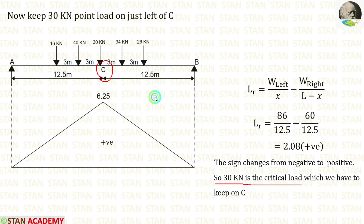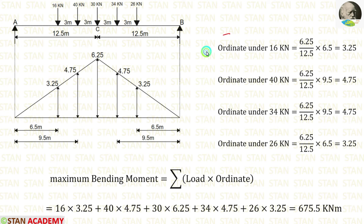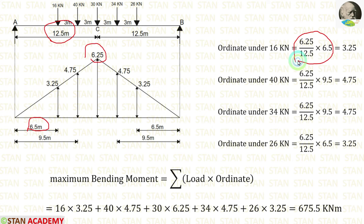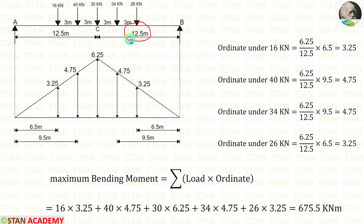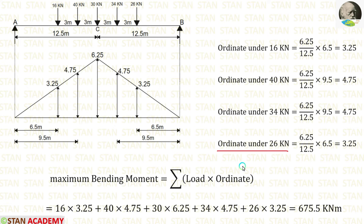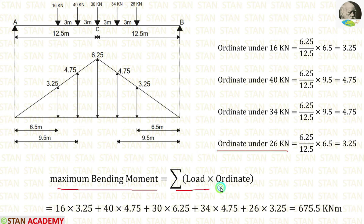I have kept 30 kN point load at point C. Now let us calculate the ordinates. For 12.5 it is 6.25, but for 6.5 meter: (6.25 / 12.5) × 6.5 = 3.25. In the same way, we calculate the ordinate under 40 kN — for 9.5 meter, we get 4.75. Similarly, we calculate the ordinate under 26 kN. After calculation, the maximum bending moment is equal to 675.5 kN·m.